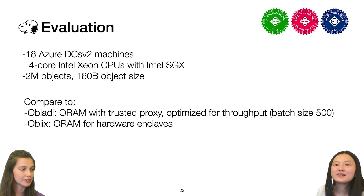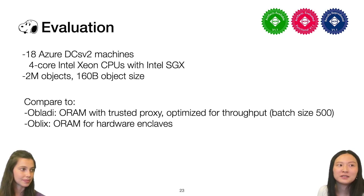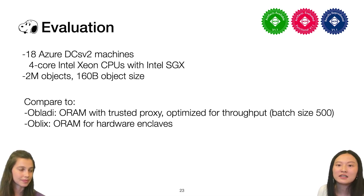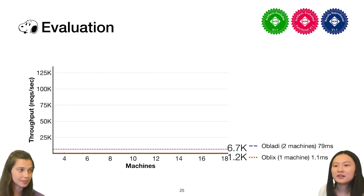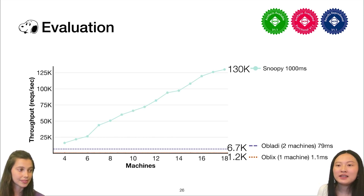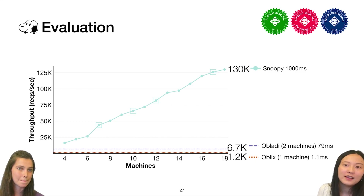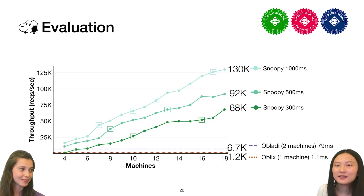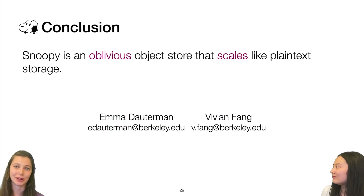We evaluate Snoopy on 18 Azure Confidential Compute instances running Intel SGX, with an oblivious object store of 2 million objects at 160 bytes per object. Our baselines are Oblati running on two machines and Oblix running on a single hardware enclave, with throughputs of 6,700 and 1,200 requests per second respectively — flat because they cannot scale even when more resources are added. With Snoopy, scaling out to 18 machines with a mean latency of 1,000 milliseconds, we reach a peak throughput of 130,000 requests per second. In conclusion, Snoopy is an oblivious object store that scales like plaintext storage.